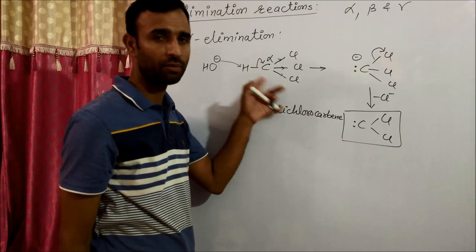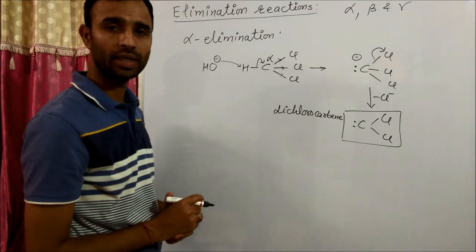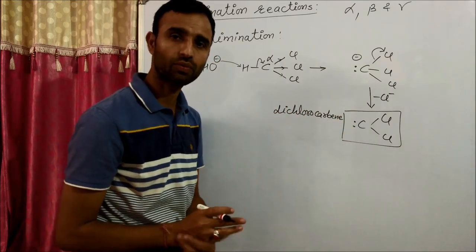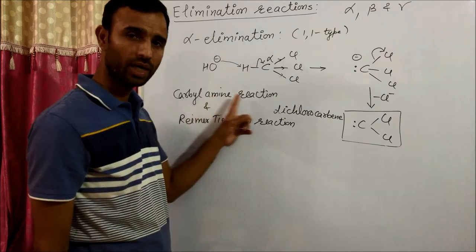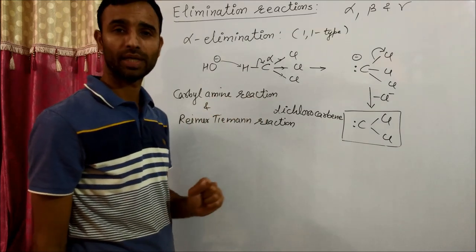It is alpha type elimination. This intermediate is the reaction intermediate. It is formed during carbylamine reaction as well as Reimer-Tiemann reaction.